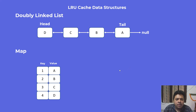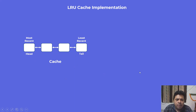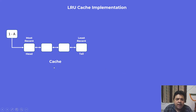Let's walk through an example starting with an empty cache that has four spots. The most recent item is on the left hand side and the least recent is on the right hand side. Since it is a doubly linked list we also have the head and tail properties. Let's insert the first element: key 1, value A. Since the cache is currently empty, this item automatically becomes the most recently used item, and we also update the same item into our map data structure for constant time access.